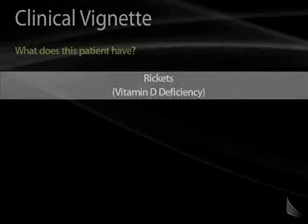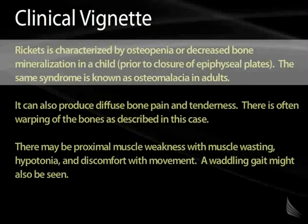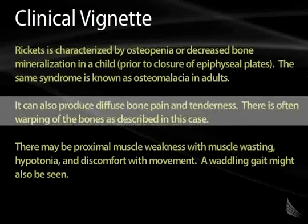This patient has rickets, caused by vitamin D deficiency. Rickets is characterized by osteopenia or decreased bone mineralization with weak, incompletely mineralized bones. This occurs in children prior to closure of the epiphyseal growth plates. The same syndrome in adults is called osteomalacia, where the bones have already fully formed but show decreased mineralization, producing diffuse bone pain, tenderness, and warping of the bones — as seen in this bow-legged child.